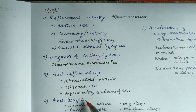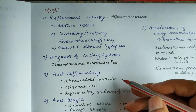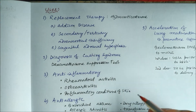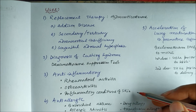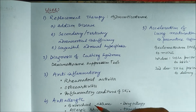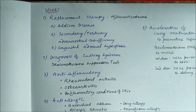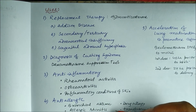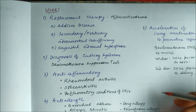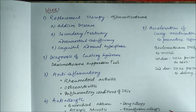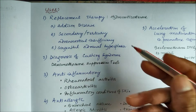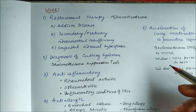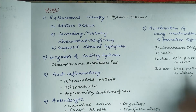Corticosteroids can be used as anti-inflammatory drugs in rheumatoid arthritis, osteoarthritis, and inflammatory conditions of the skin. They can be used as anti-allergic and anti-inflammatory agents in bronchial asthma, allergic rhinitis, drug allergy, transfusion allergy, and any allergic condition.